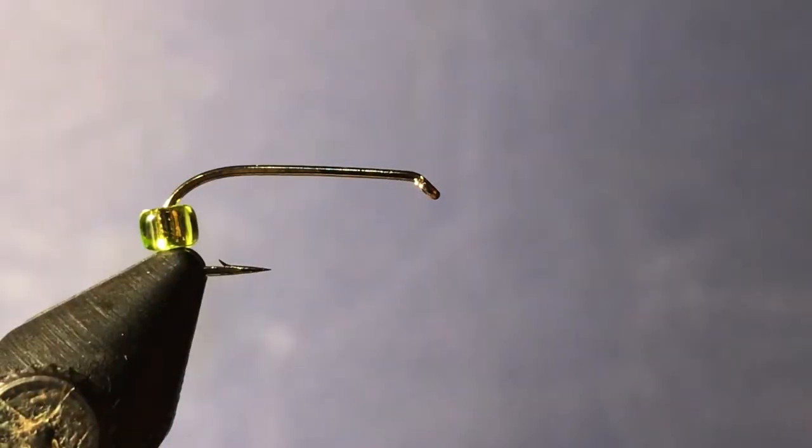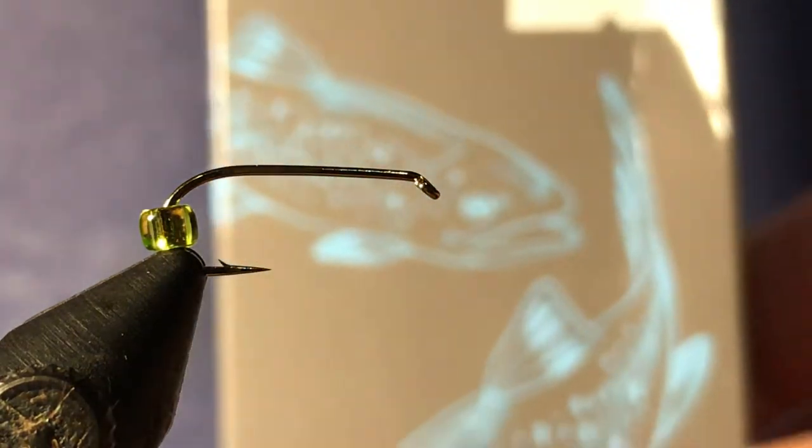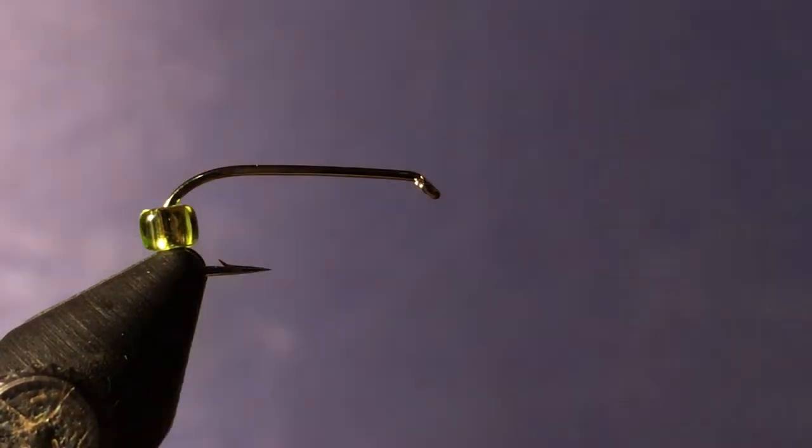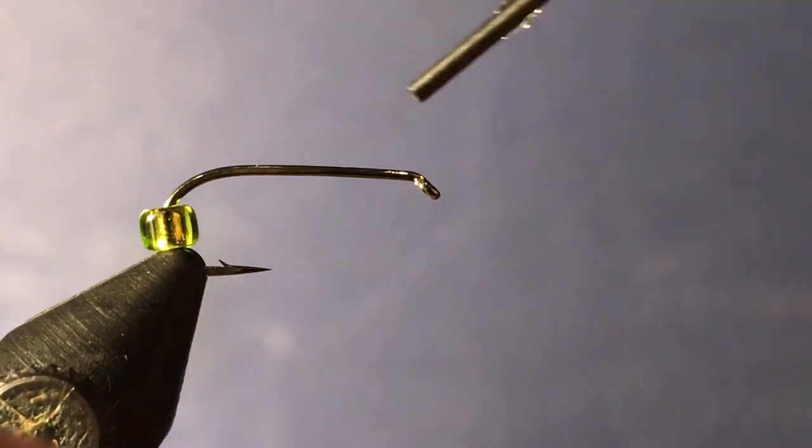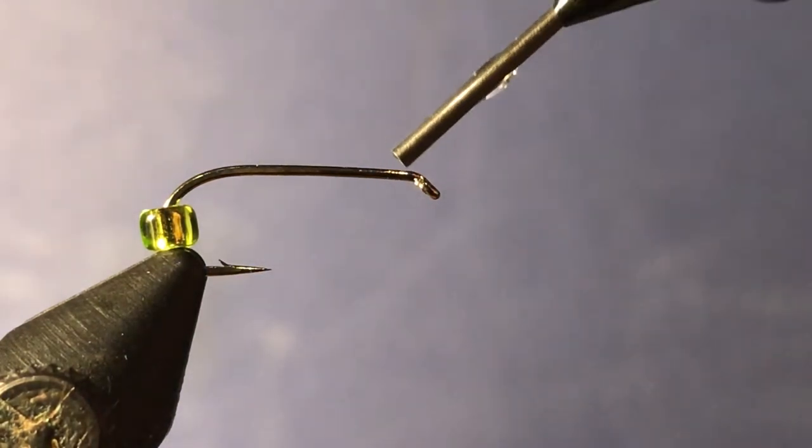Oh sorry, hook to start off with. We're using a TMC 100 hook in a size 12. So we're going to do is just put a bit of this Gulff fly tying resin, UV activated resin, that's the stuff here, really good. So what we're going to do is put a dab of that up near the eye.